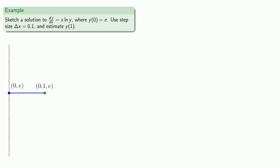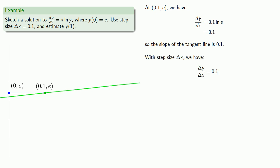Now lather, rinse, repeat. At (0.1, e), we have our derivative equal to 0.1. So the slope of the tangent line is 0.1, and with the step size of delta x equals 0.1, we find delta y is 0.01. And so x has increased by 0.1, y has increased by 0.01, and so we get to the point (0.2, e + 0.01).